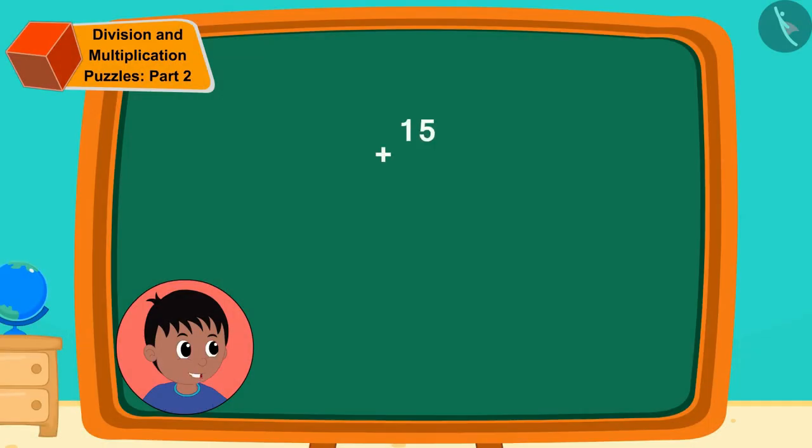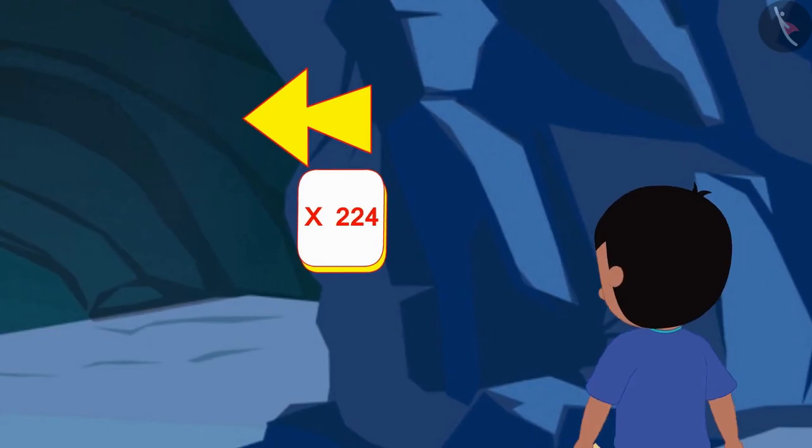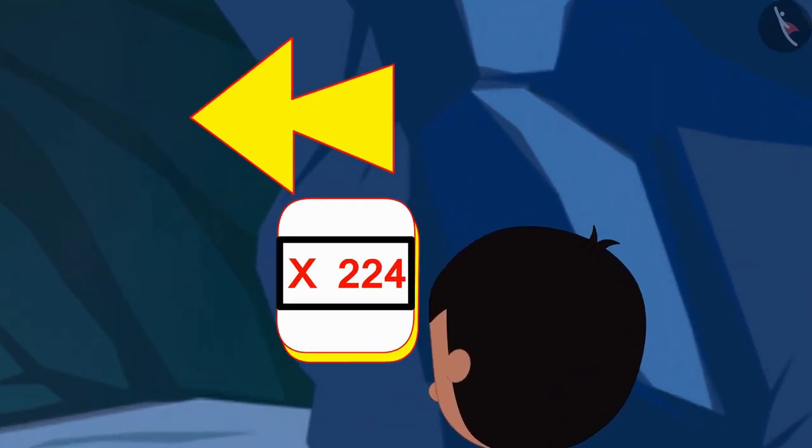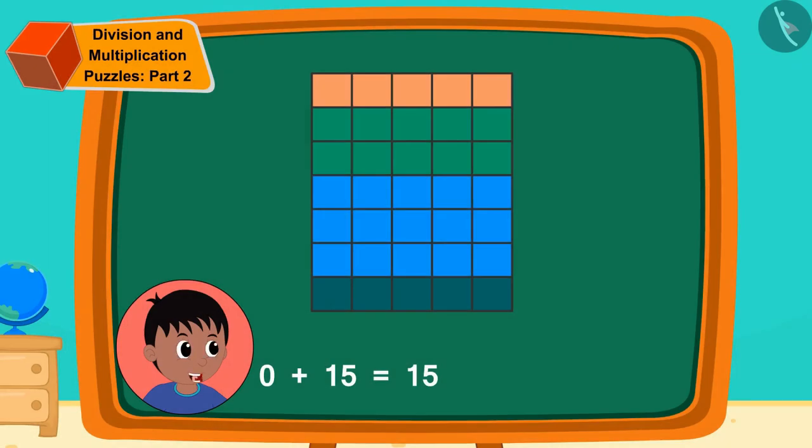Raju started walking further. Oh, now here 224 is written along with the multiplication symbol. That means I have to multiply 15 by 224. Raju quickly multiplied 224 with 15 in this way and wrote down the answer.